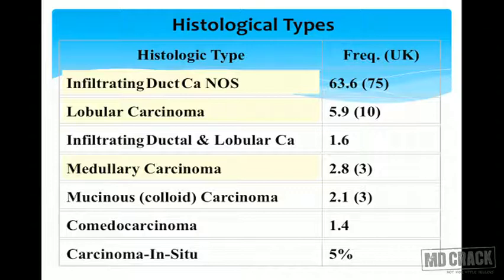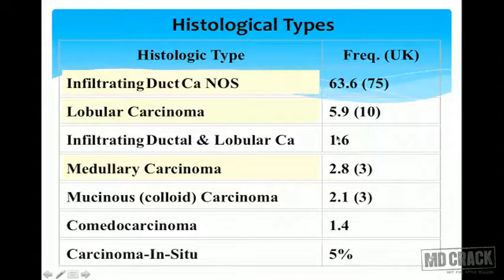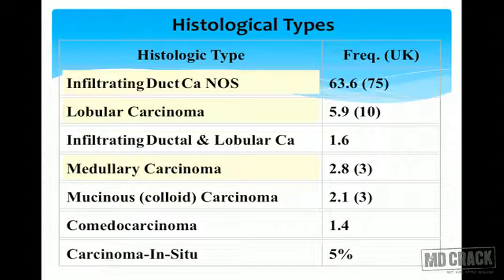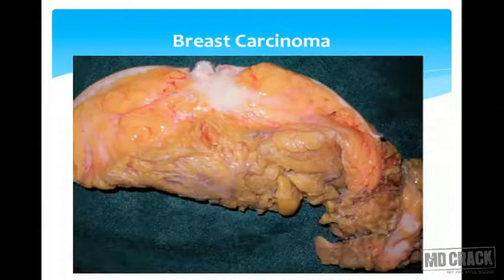Histological subtypes of infiltrating ductal carcinoma: the NOS (not otherwise specified) type constitutes approximately 65% of cases. Lobular carcinoma is around 5-6%. Combined infiltrating ductal and lobular carcinoma is very rare (~1.5-2%). Mucinous (colloid) carcinoma is around 3%. Comedocarcinoma, characterized by central comedo-necrosis, accounts for about 5%. Other rare types include metaplastic carcinoma, comedocarcinoma, and lymphomas of the breast.